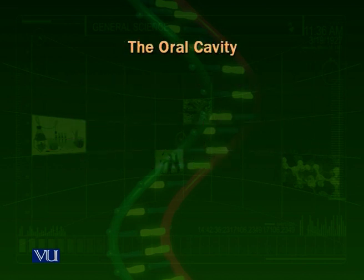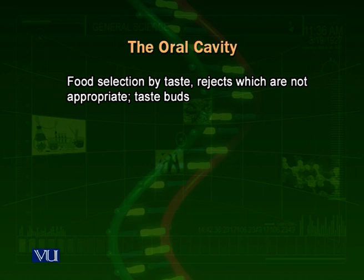Then comes the oral cavity — through the mouth, food enters inside the oral cavity. The oral cavity also has its own selection process: our tongue has taste buds. When food enters inside the mouth, we taste it; our taste buds feel what its taste is like. If it tastes bad, it is again rejected. So food selection is a very important property of the human digestive system — even if food smells and looks okay, if its taste is bad it is rejected.